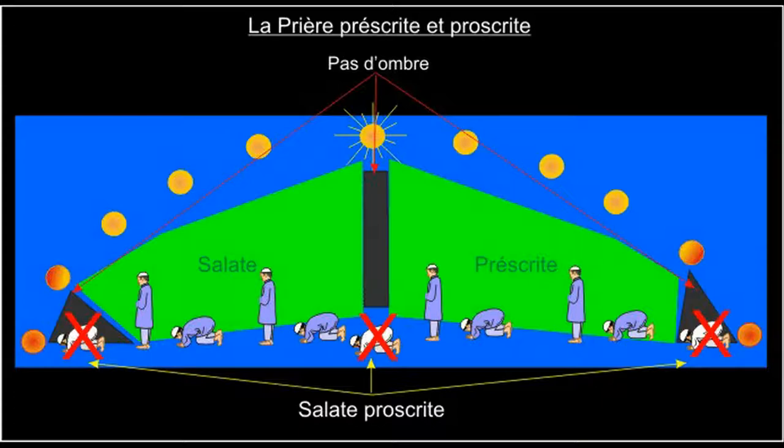The proscribed moments of prayer are connected with the non-existence of the shadow, the sunrise, the sunset, and the zenith. In this work, we try to give scientific explanation to some enigma in the act of prayer.